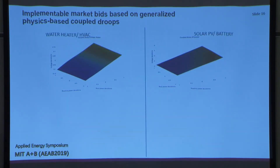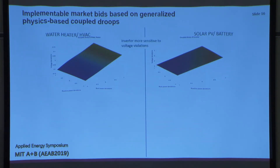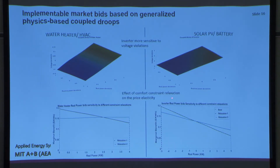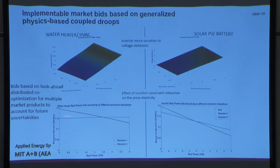Through embedded decision making at the device level, we found that water heaters and HVACs are less sensitive to voltage violations. On the axes of real and reactive power deviations versus voltage violation on the Z-axis, solar PV and batteries are more sensitive to voltage violations, but with small adjustments to real or reactive power set points they can control their own voltage. Device-level decision making also produces bids that depend on how comfort constraints are modeled — relaxed comfort constraints yield more flexible bids, while tighter constraints produce more horizontal bids. This bidding is based on look-ahead estimated market prices.